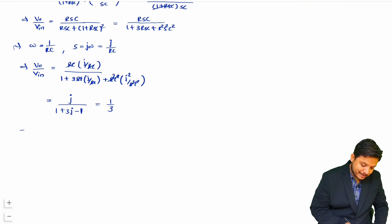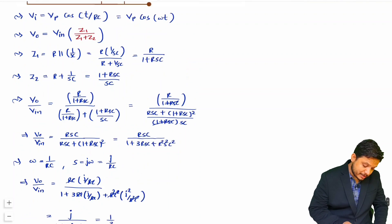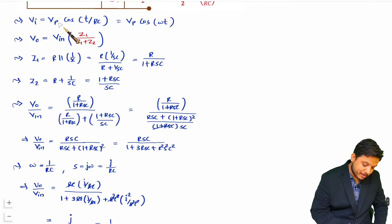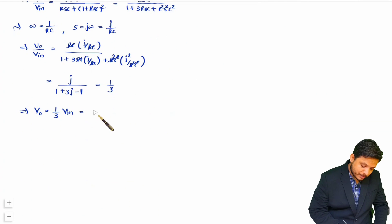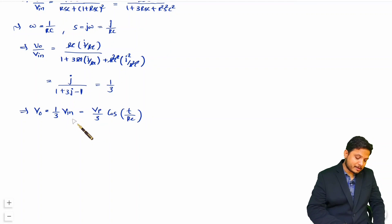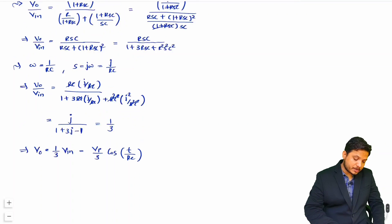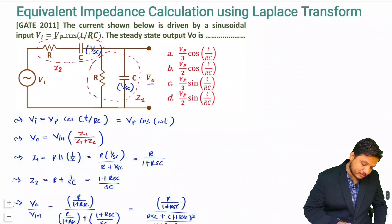So v0 = (1/3) × vin, and since vin = Vp cos(t/RC), the output is v0 = (Vp/3) cos(t/RC). Checking the options, Vp/3 × cos(t/RC) is the correct answer.